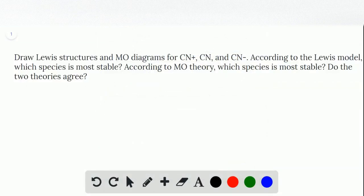All right, so to do this problem, I'm going to first look at the Lewis structures because they're a little bit more simple. So we have CN in all cases, and the only thing that's going to differ here are the number of electrons that we have.